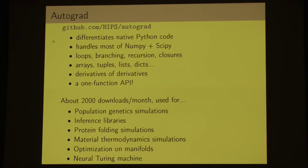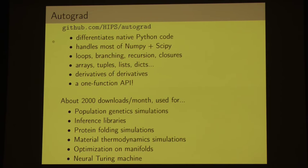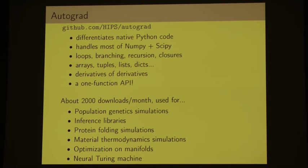We can't really hold a candle to the user base of, say, TensorFlow, but Autograd is downloaded very often and used extensively in communities adjacent to deep learning, such as people writing simulations for populations. And due to the nice expressiveness we have, for instance, someone wanted to write a reference implementation of the neural Turing machine, and they wrote it in not too many lines of Autograd. If you understand how complicated a neural Turing machine is to write, this should give you an idea of the capability of this tool.